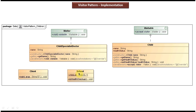Here you can see the School class — it has a child list which contains all the kids who are studying in the school. And here you can see the Client class, which has a main method used to demonstrate this visitor design pattern. I will open Eclipse and show you the code so that you will understand this clearly.